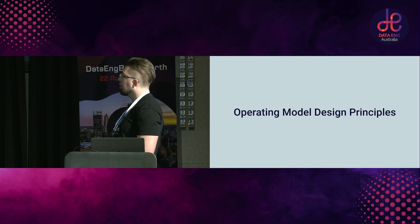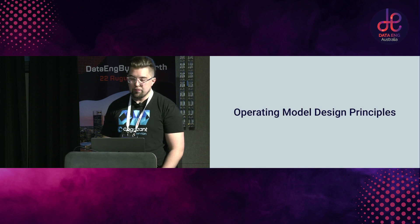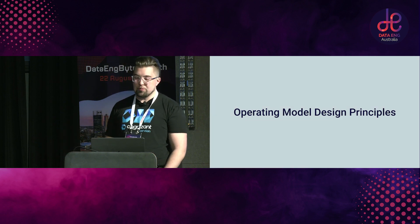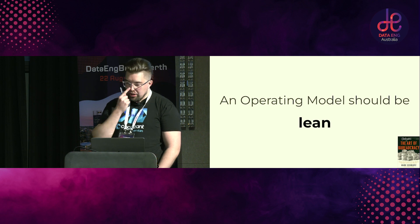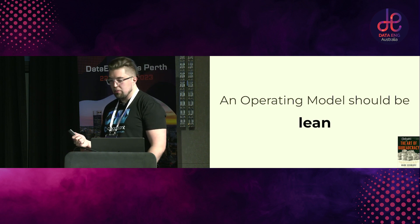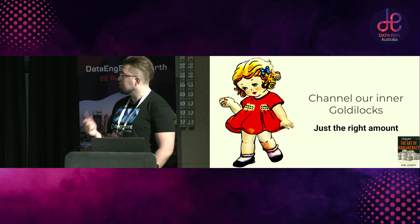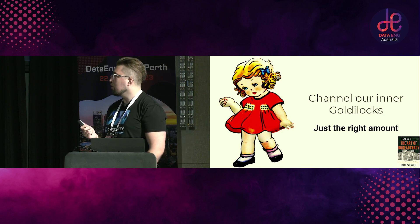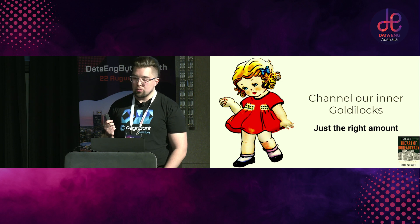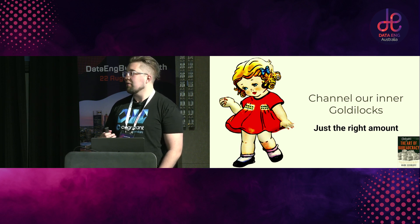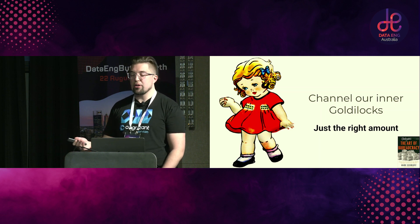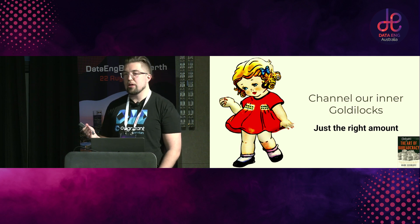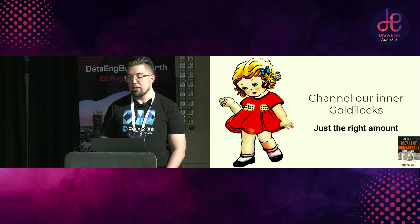When you're designing an operating model, these are the principles we abide by. An operating model should be lean — you want just the right amount in your operating model. You want to define just the right amount and not overdefine things. You don't want to tell everyone exactly how they should be doing everything and have all the engineers go 'this is ridiculous, you don't know what I should be doing.' You need to be careful — less is more here. Make sure you're defining what you need, not everything you could define. Enterprises have a habit of over-defining everything because they want control — and that's how you kill all innovation.